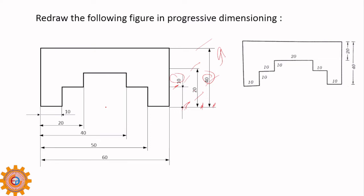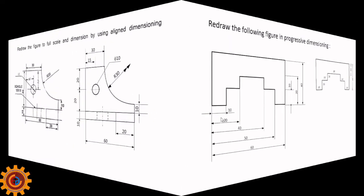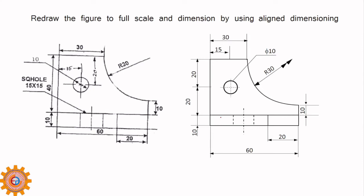If one more dimension is added — this is the aligned system — you have to break this line and put the dimension text at that place. The two arrow lengths must be the same.